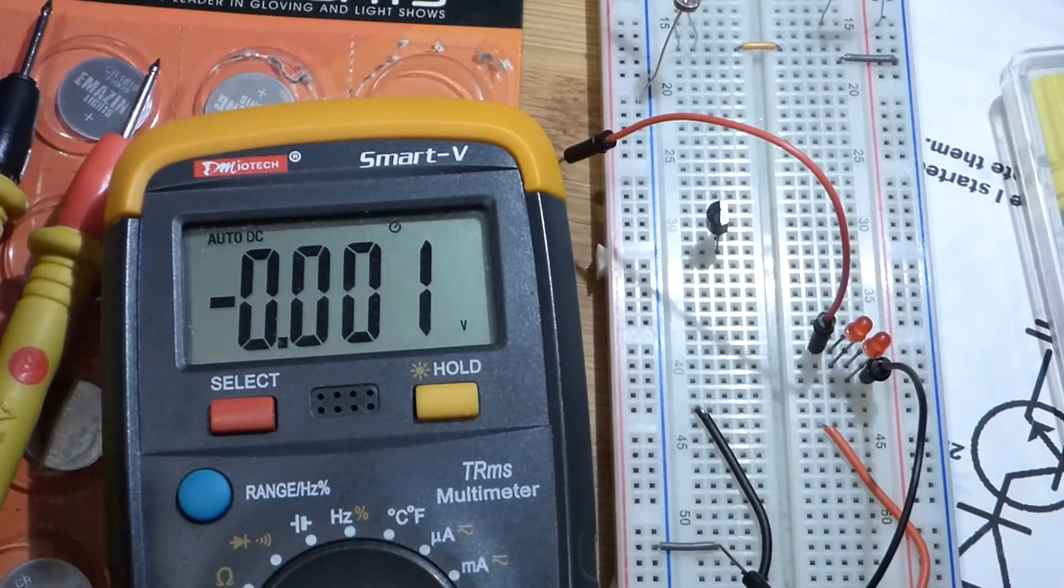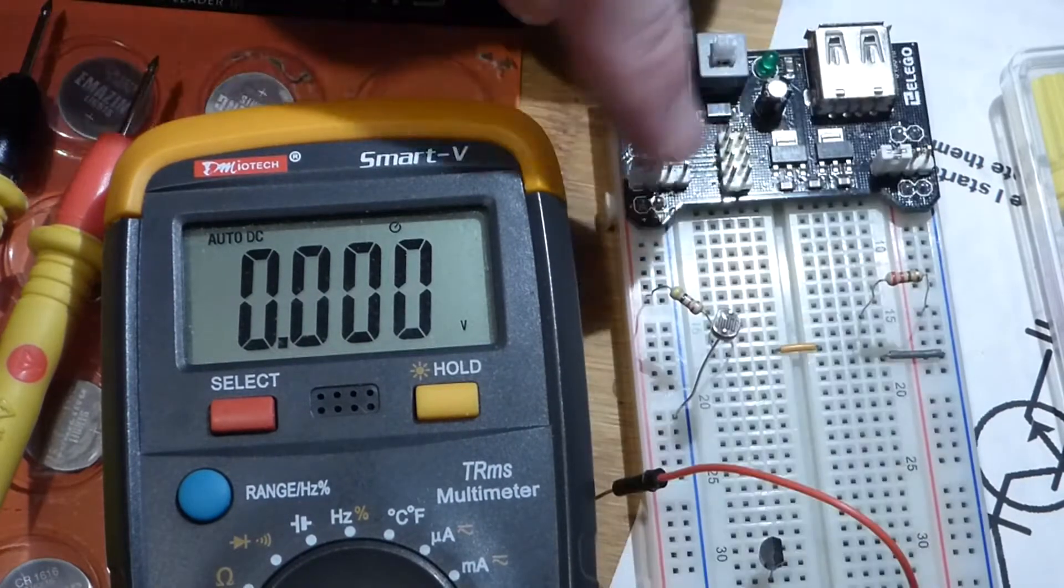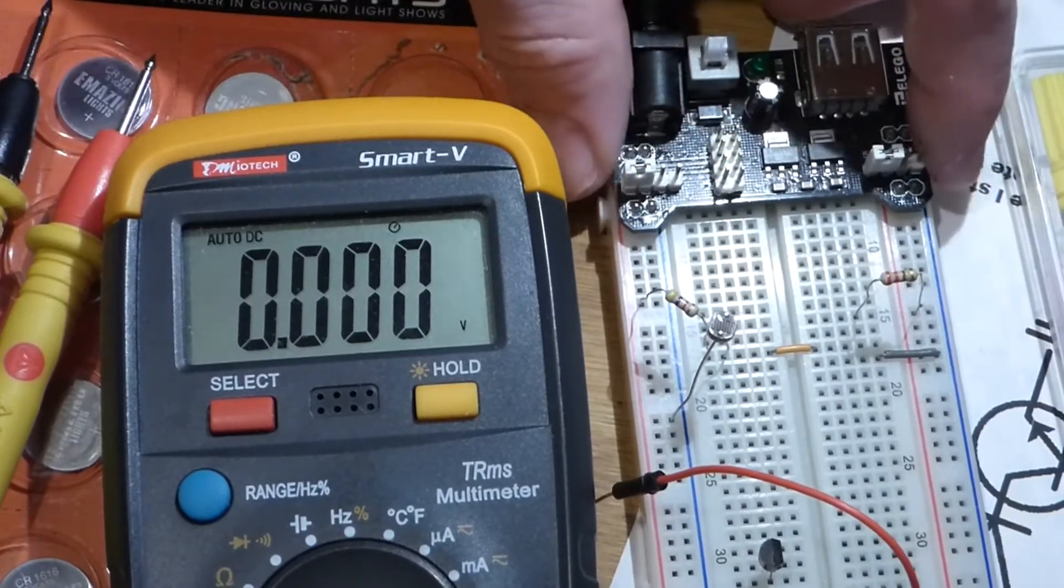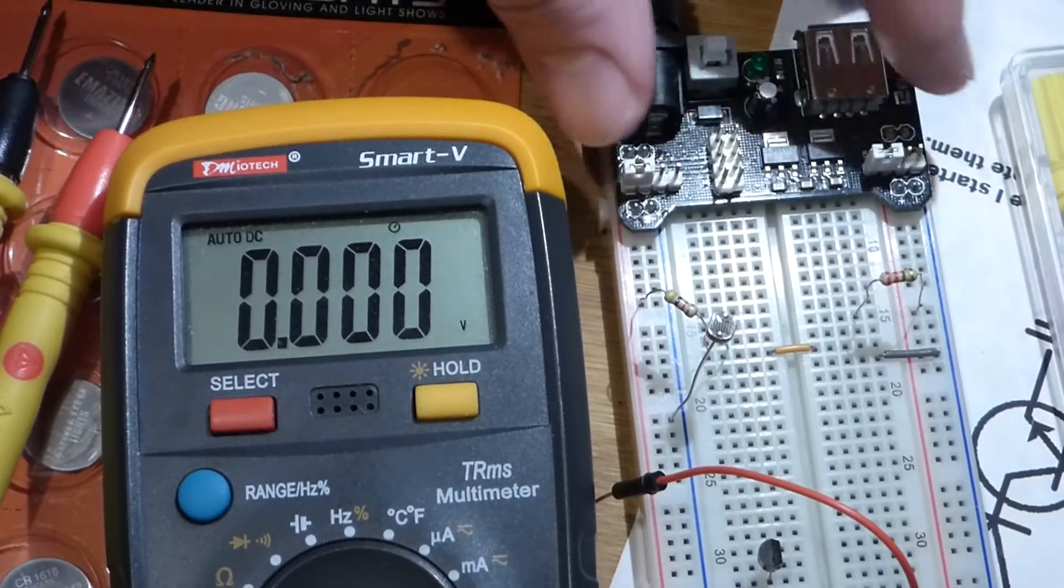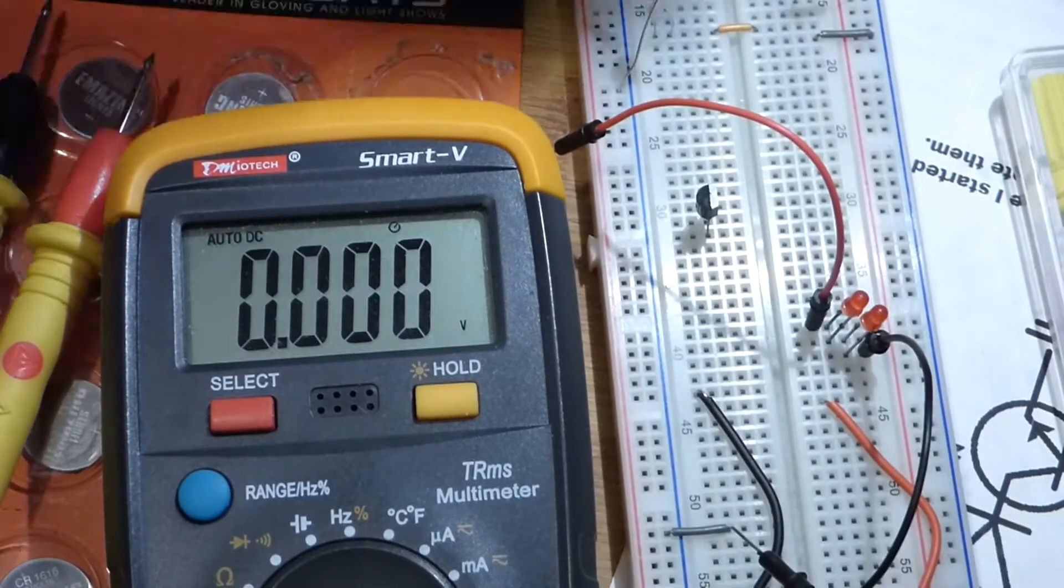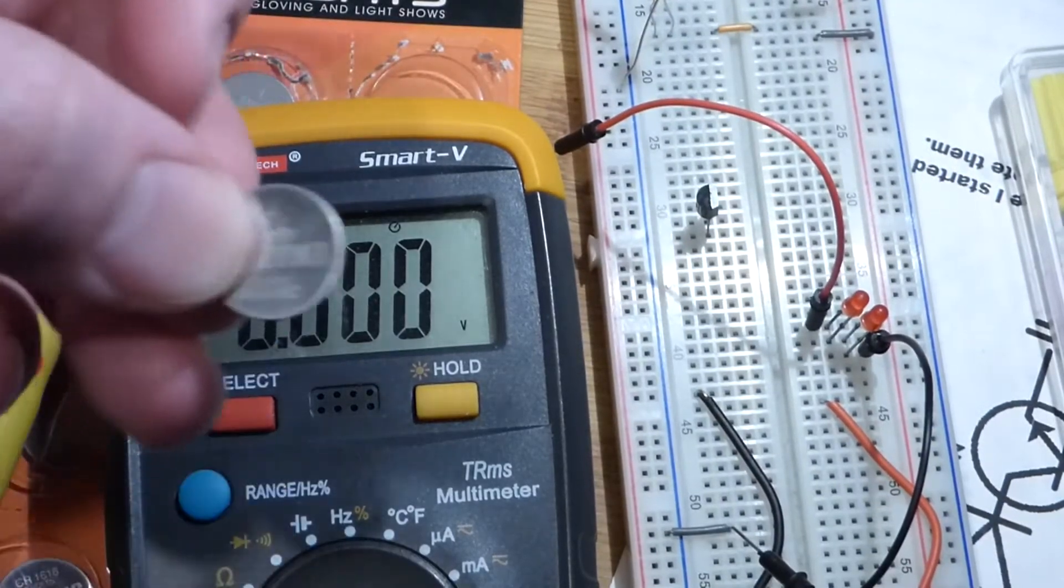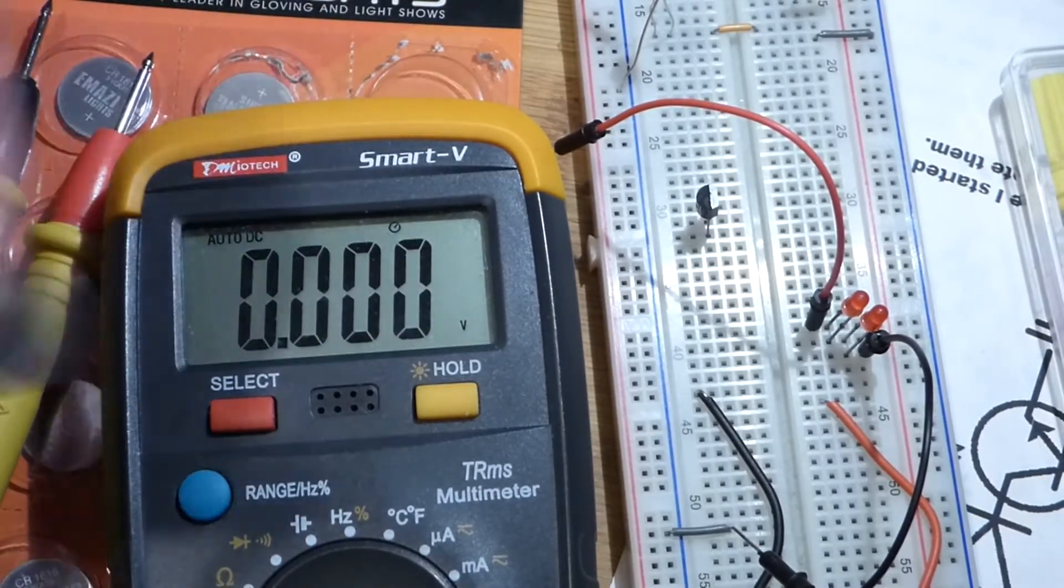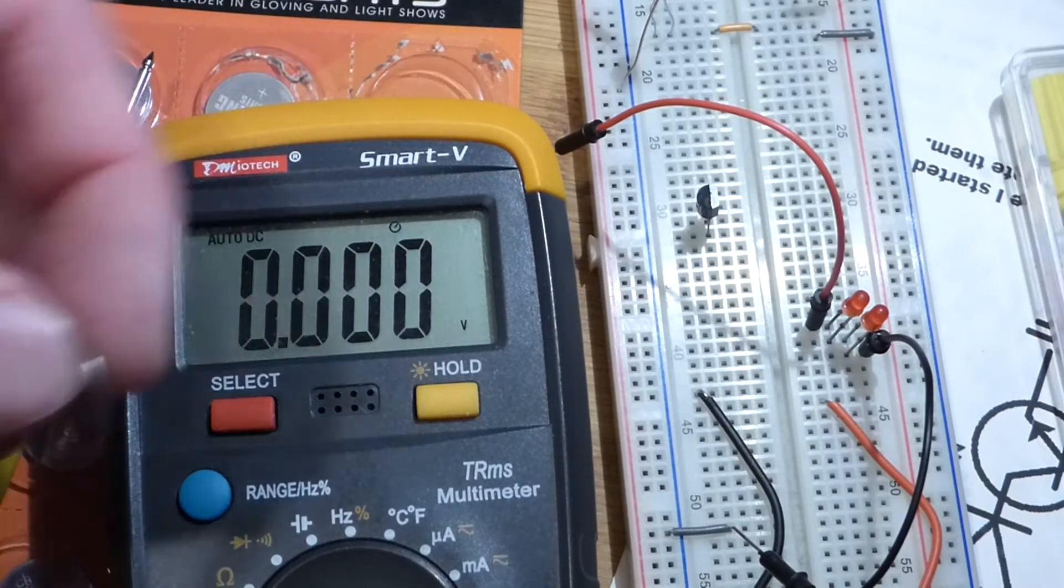This power supply has a 3.3 volt option, so we can build a prototype circuit using the 3.3 volts of the power supply. If we plan on powering that circuit with one of these batteries, we'll get the same voltage, especially when the battery is new.